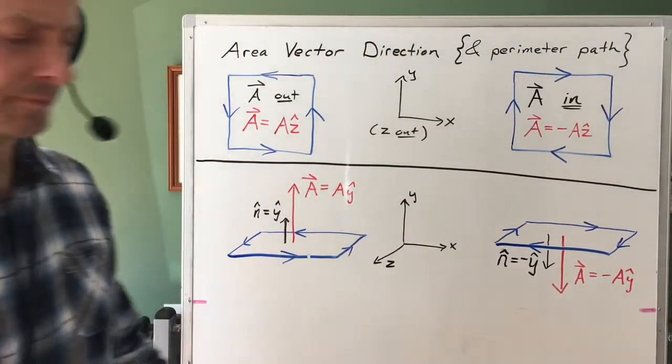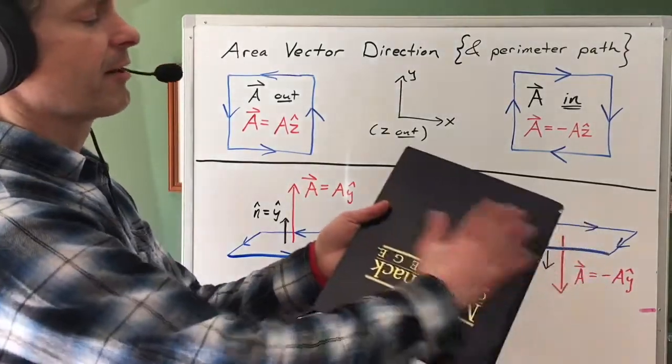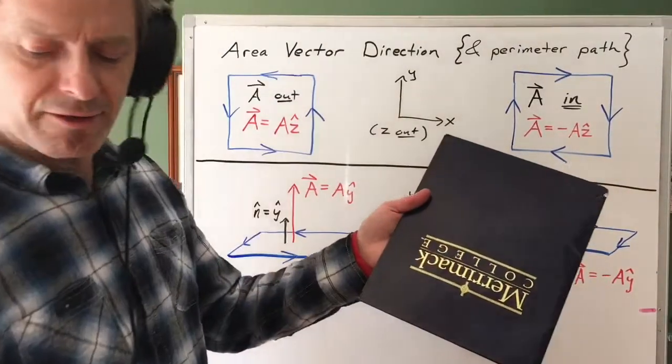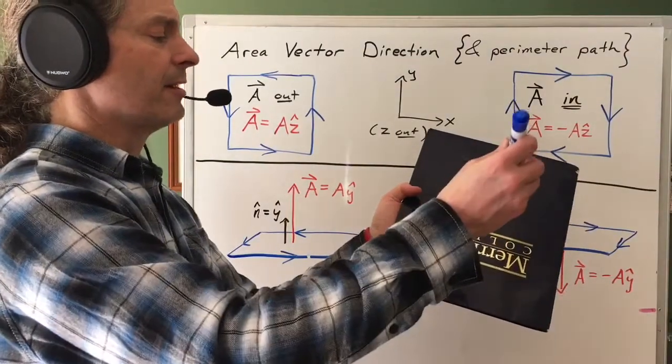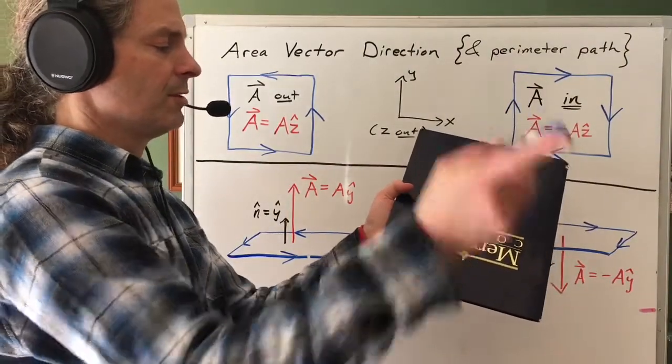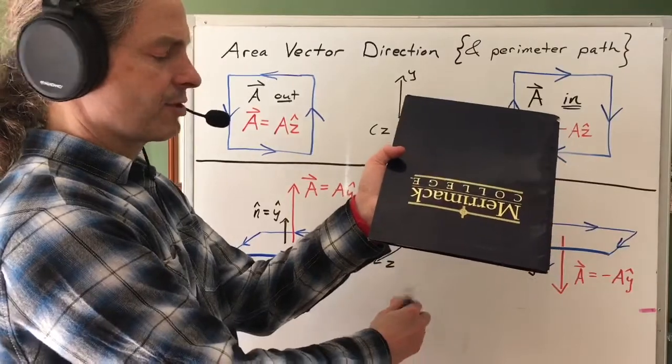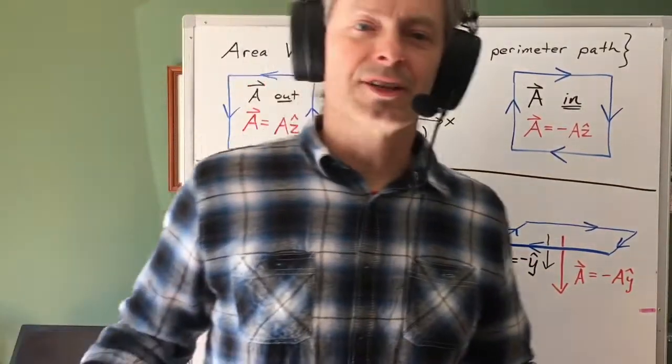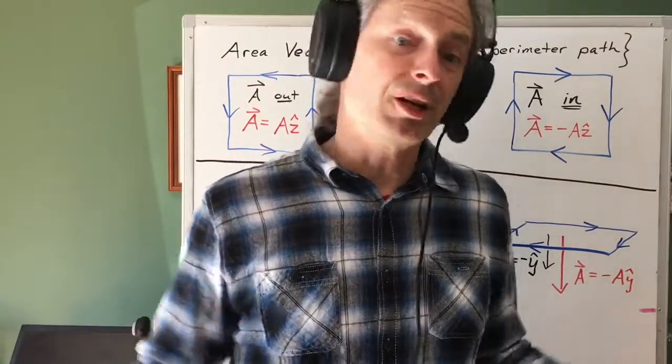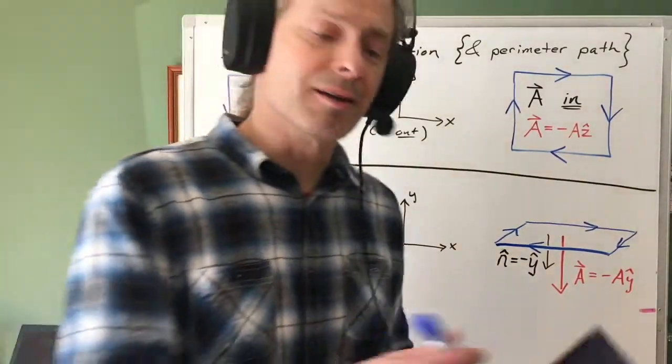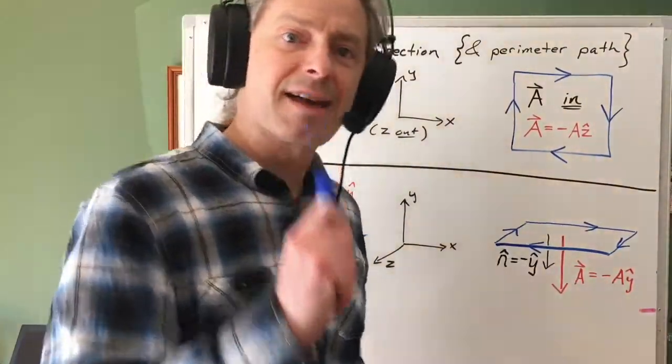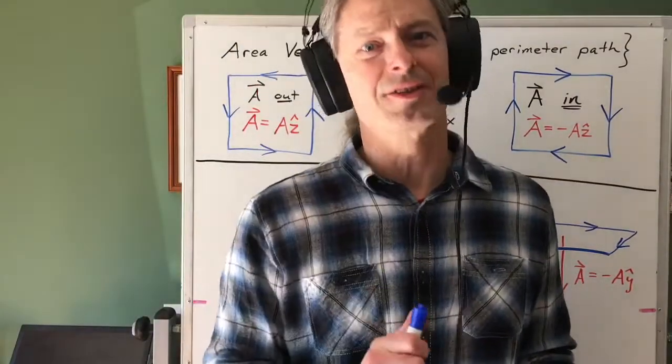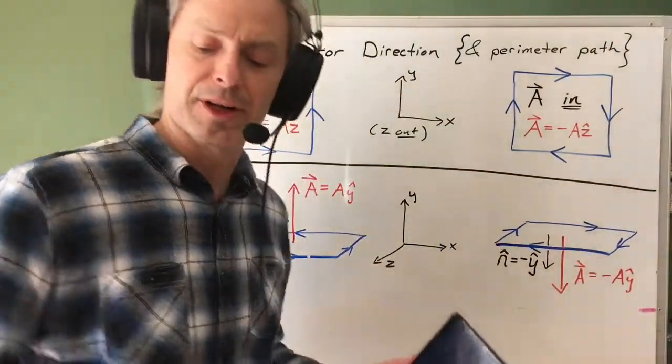So remember that if I have some area, the area vector is taken to be perpendicular to the plane of that area. So I could take this direction, or I could take that direction. Which direction do I take? Doesn't matter. Pick one. But once I pick a direction for my area vector, that constrains, that chooses in effect a direction that's positive for going around the perimeter.